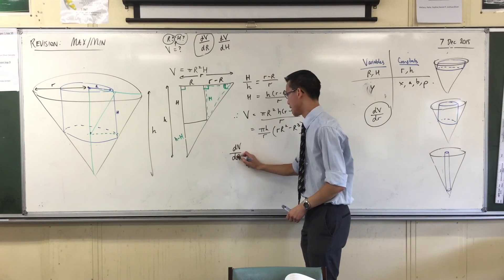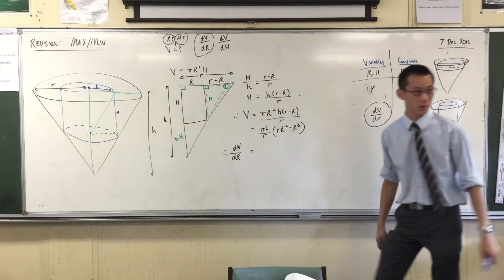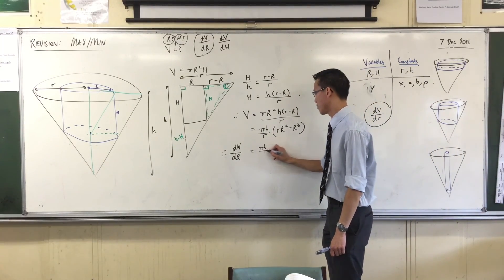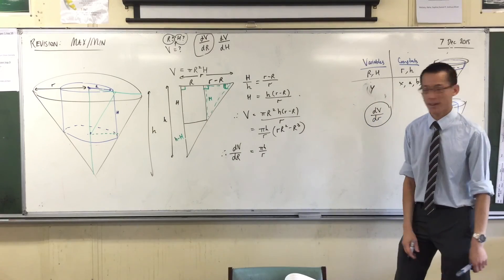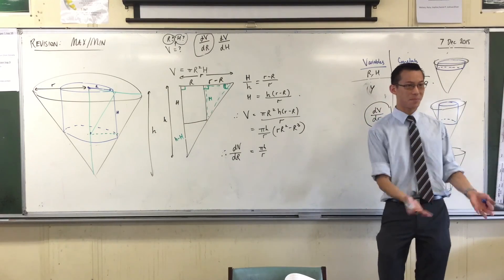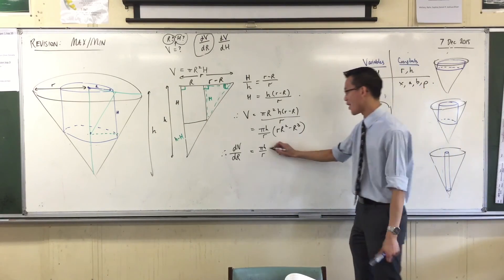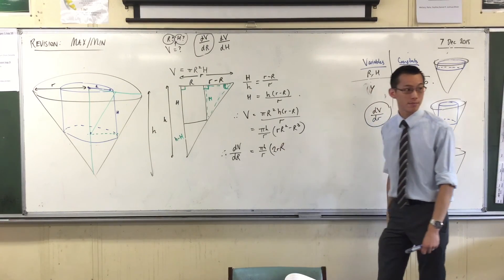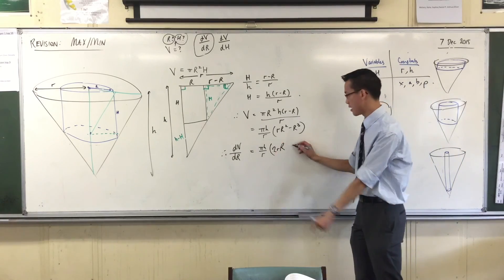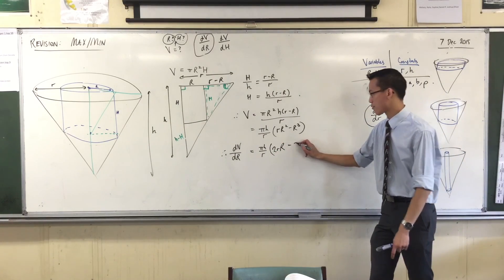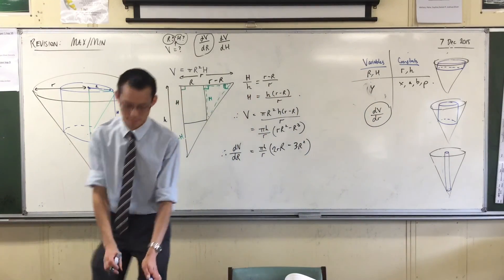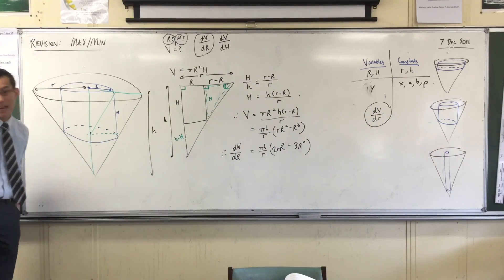So, dV/dR equals. Now, because that guy at the front is a constant, I just write him down. No big deal. And then to deal with this, it's just a polynomial. No fancy rules required. So what does this become? Two little r, big R. You can see I'm writing the constants out the front. And this guy becomes three capital R squared. Done. That's not hard. In fact, it's all really downhill from here.